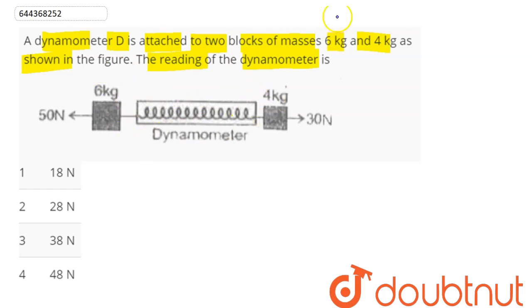If we consider this 6 kg and 4 kg as a whole to be a system, we can say the net mass of this system is 10 kg, considering the mass of the dynamometer to be negligible. We have 30 Newton acting to the right side and 50 Newton acting to the left side.